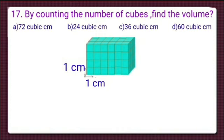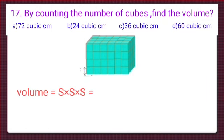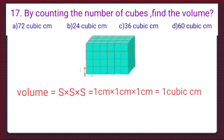Question number 17: by counting the number of cubes, find the volume. We have 4 options. Here is a cuboid made up of small cubes. We all know that the volume of 1 cube is equal to side × side × side. The side of 1 small cube is 1 centimetre, so the volume of 1 cube is 1 cm × 1 cm × 1 cm, which equals 1 cubic centimetre.